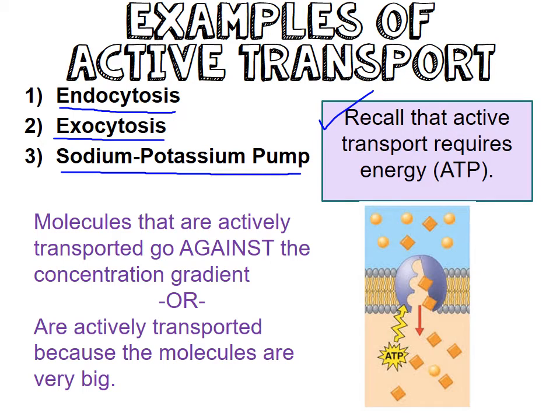Active transport requires the use of energy. Molecules that are actively transported go against the concentration gradient — from low to high. We are moving backwards, like going against the tide, swimming in the opposite direction, either because we're going low to high or because the molecules are really big.